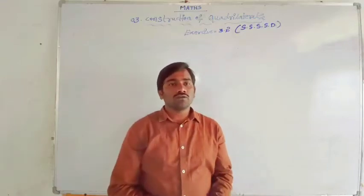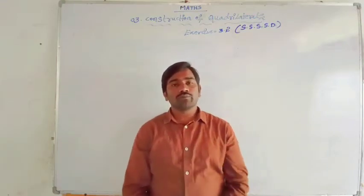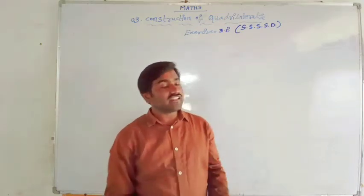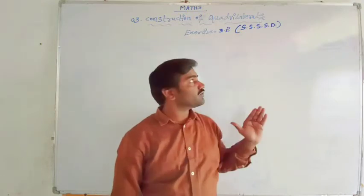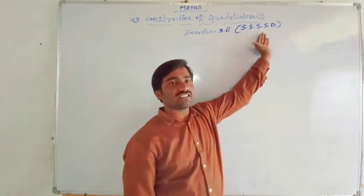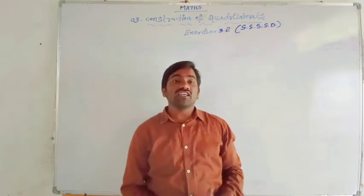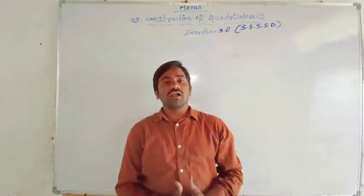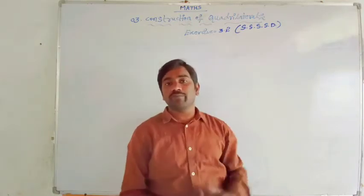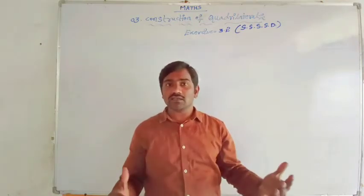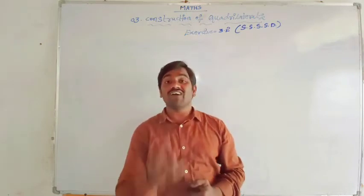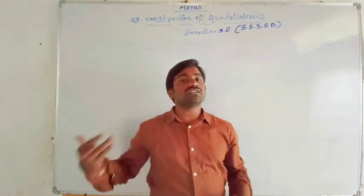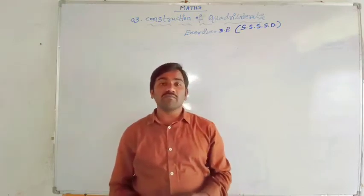Hi children, today you are going to learn 8th class, 3rd chapter - construction of quadrilaterals. In exercise number 3.2, we cover when 3 sides, 4 sides and 1 diagonal is given. In exercise 3.1 we learned how to construct a quadrilateral where 4 sides and 1 angle is given. Here there is no angle - with 4 sides and 1 diagonal given, we need to construct. As we discussed in the previous video, minimum we require 5 measurements.